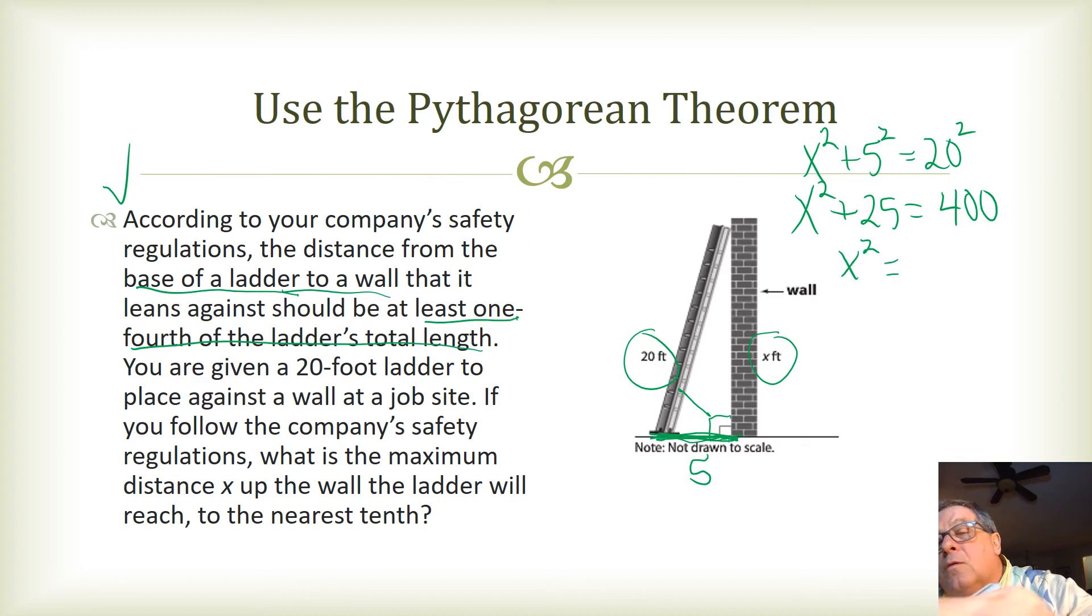So then we got x squared equals 375, and to find x, we're going to take the square root of both sides, and when we do, we've got x equals the square root of 375.